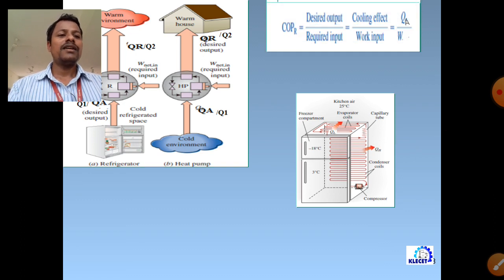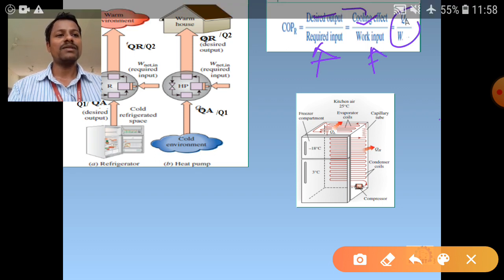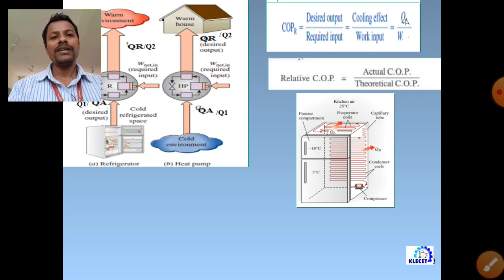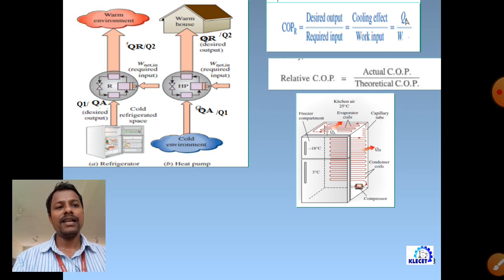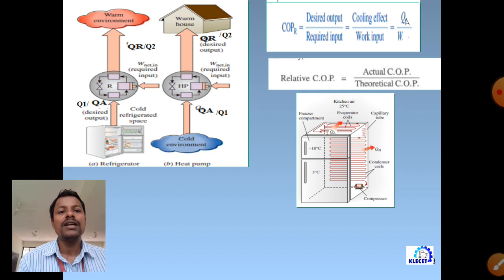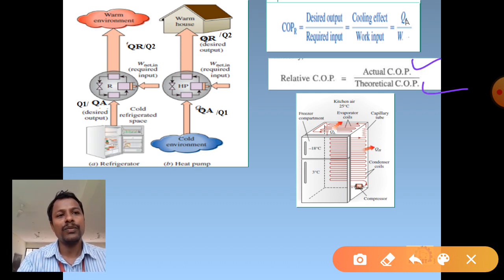We will apply mass, energy, and entropy balances for basic processes (SFEE) for each device - compressor, condenser, expansion valve, and evaporator - all considered as steady flow energy devices. We will determine refrigeration system performance (COP for VCR) and study the effects of key parameters on VCR performance, similar to how we studied effects in vapor power cycles.